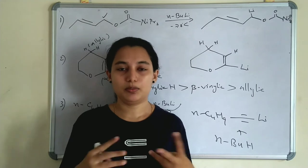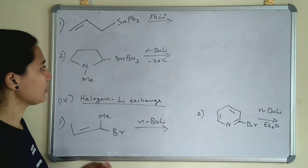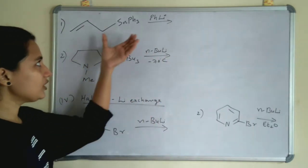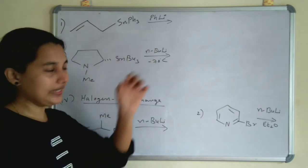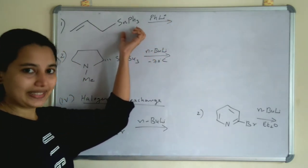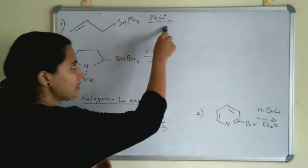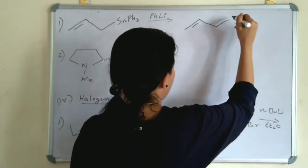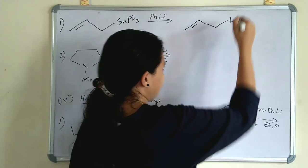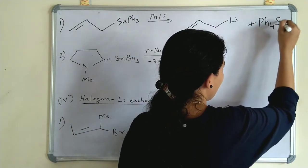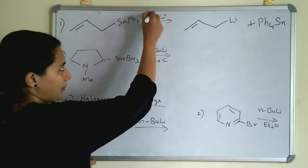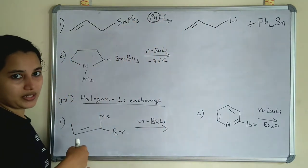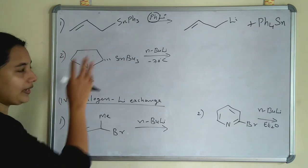The third important reaction is metal exchange. Alkylithium undergoes metal exchange between lithium and another metal — here, tin (Sn). Lithium replaces tin in the compound. The product has lithium in place of SnPh₃, and the by-product is Ph₄Sn (or Ph₃Sn plus Ph). So lithium is replacing the tin metal — that is the metal exchange reaction by Alkylithium.